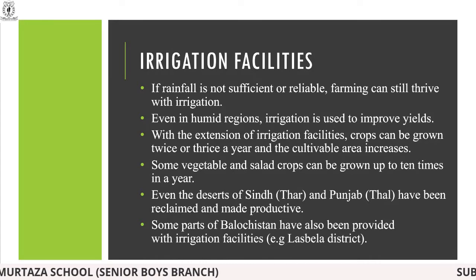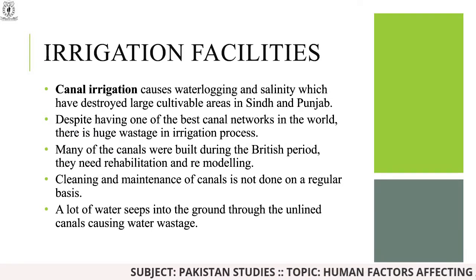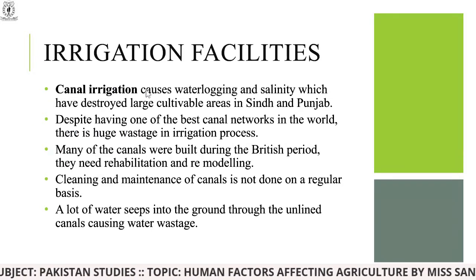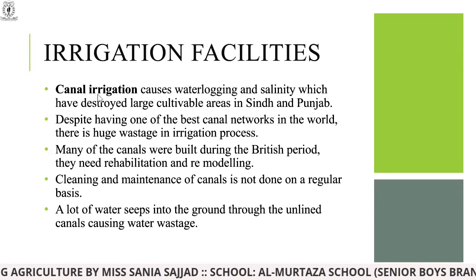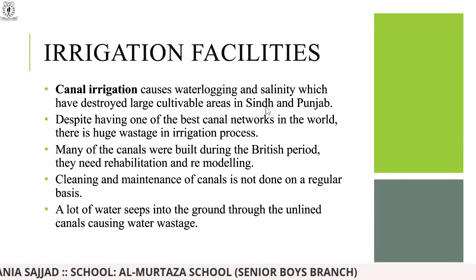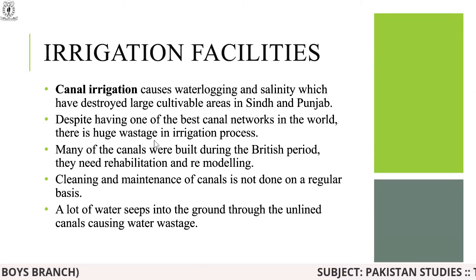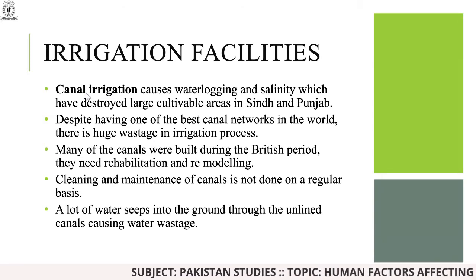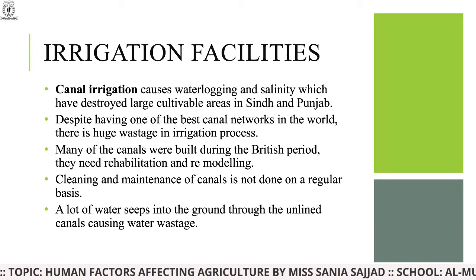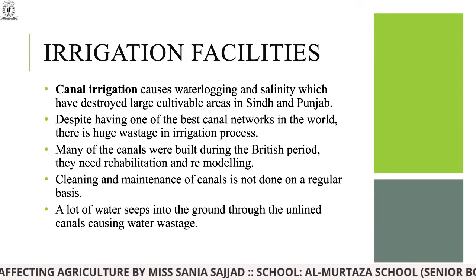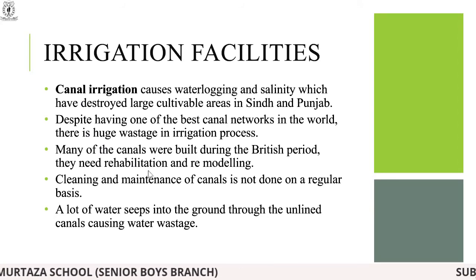Now discussing canal irrigation: it causes waterlogging and salinity, which have destroyed large cultivable areas in Sindh and Punjab. Despite having one of the best canal networks in the world, there is huge wastage in the irrigation process. The canals are not properly built or linked with each other, creating a disturbing situation.